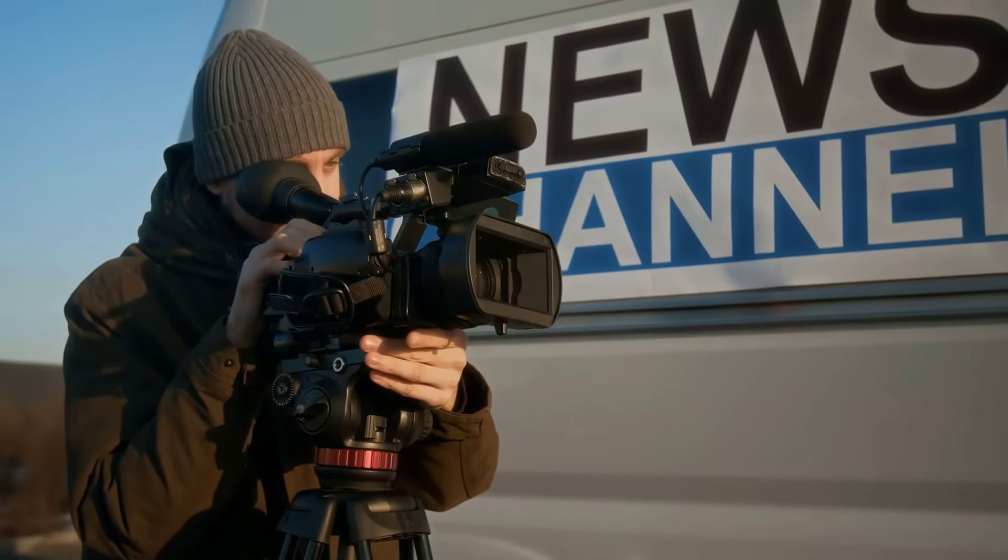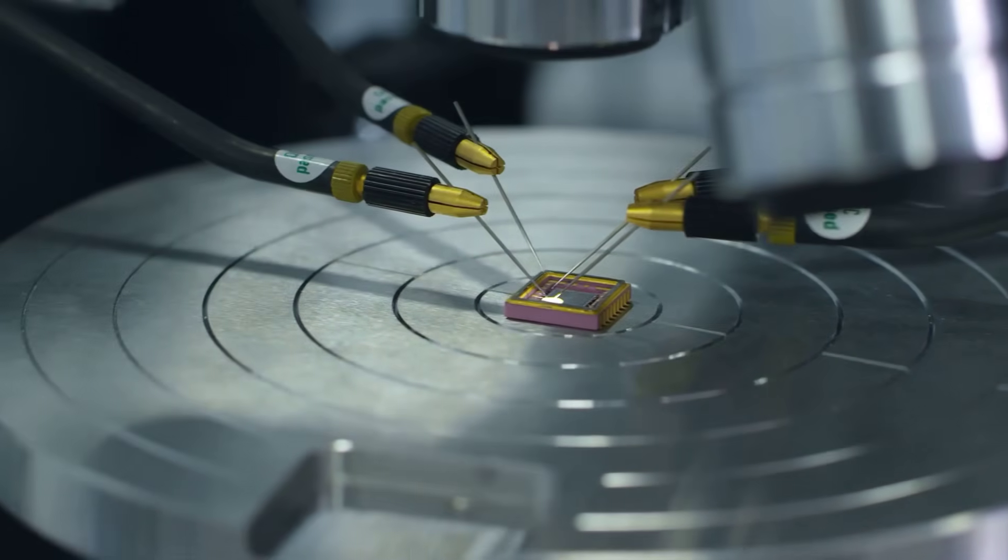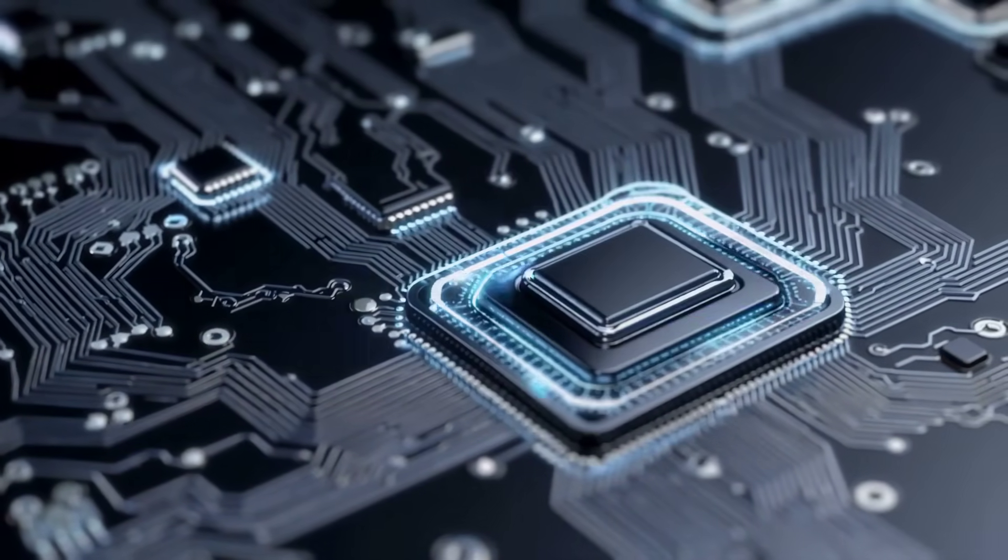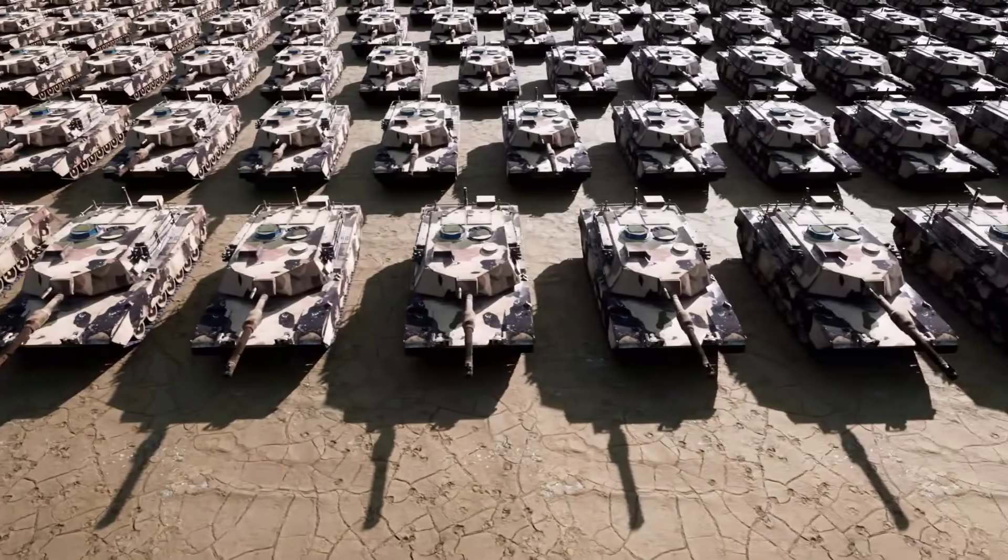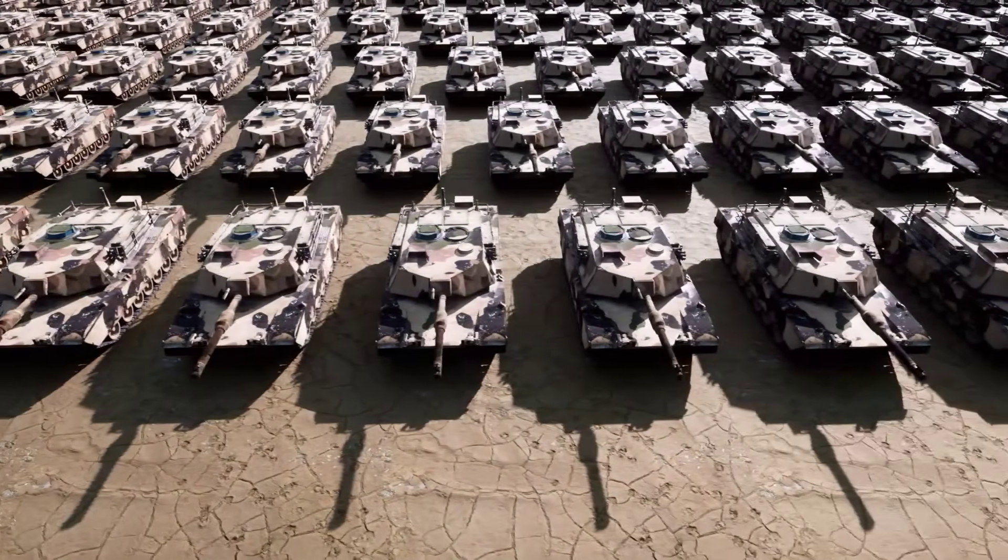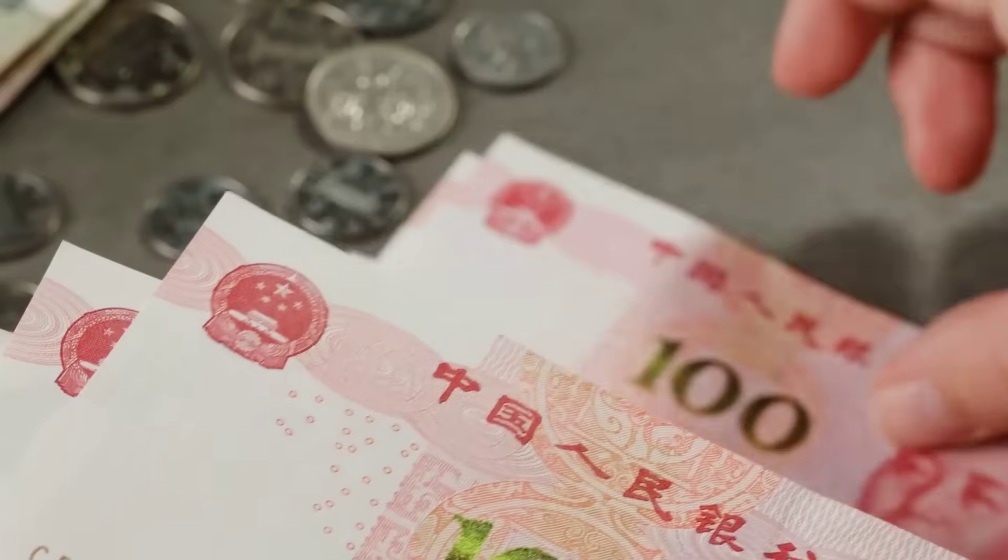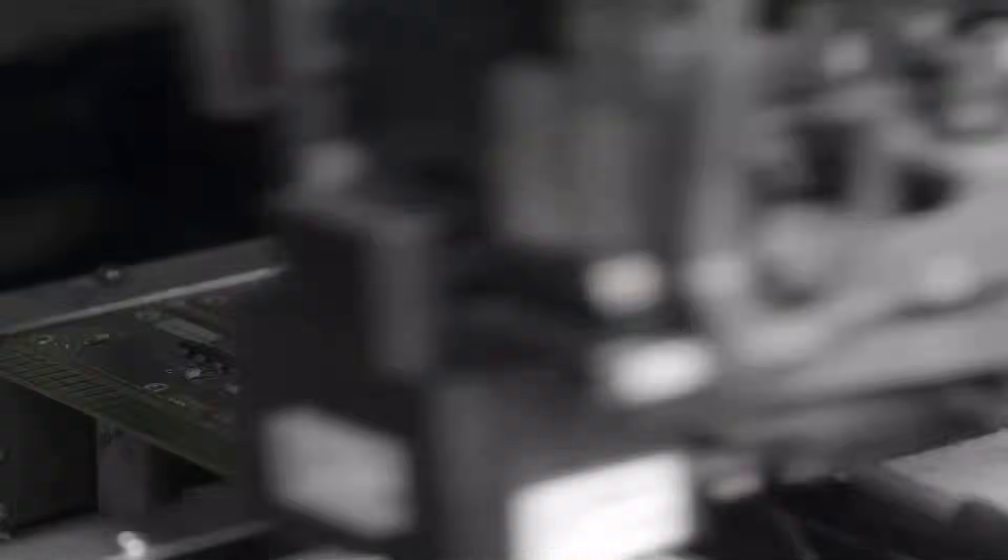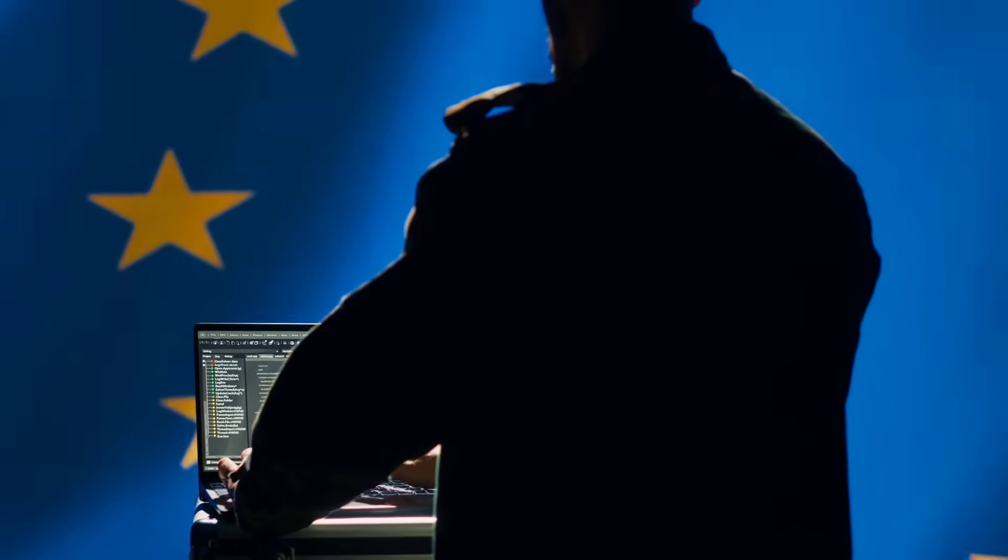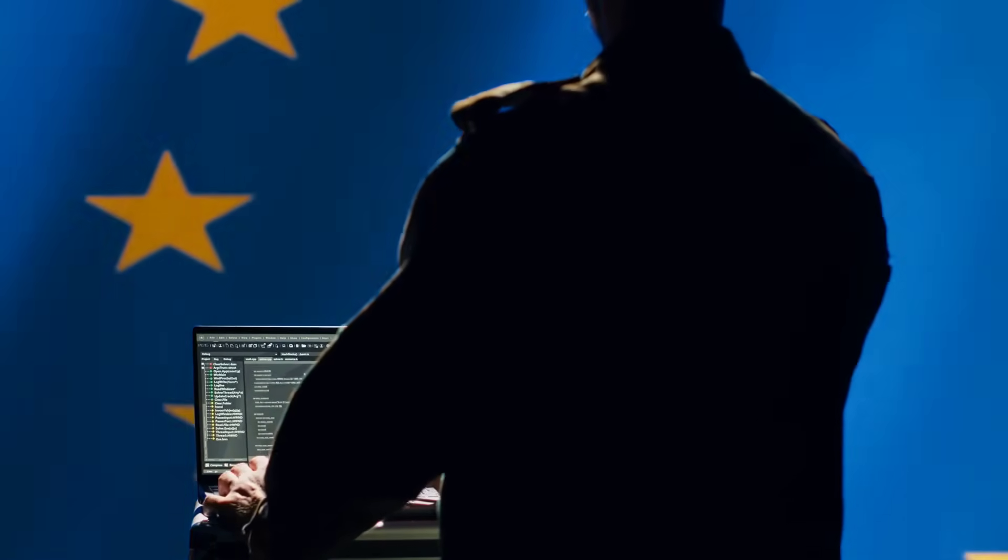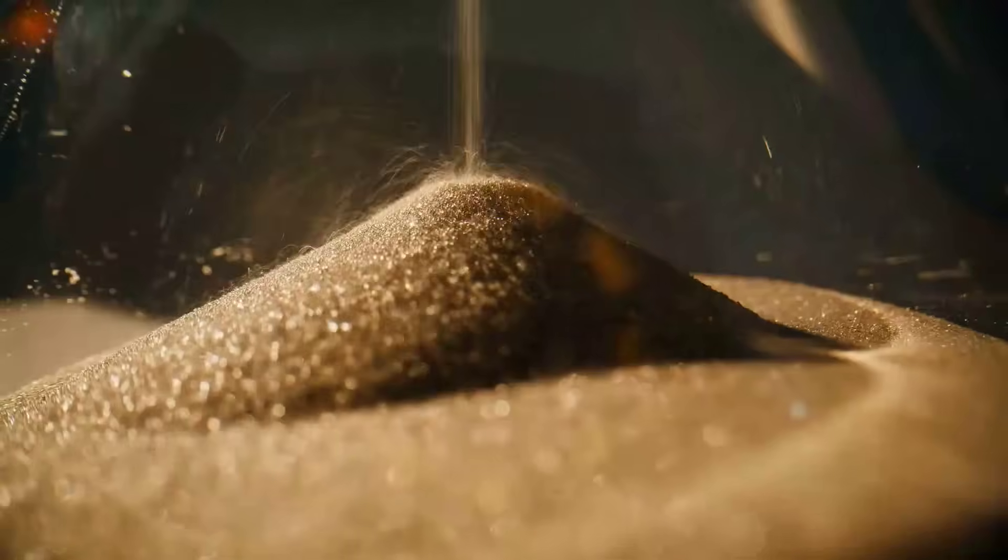But here's where this gets really intense. And this is the part the media isn't covering. China, the United States, and Europe are no longer racing for the most powerful chip. They're racing for the lowest power chip. Because whoever cracks analogue AI first doesn't just win the tech industry. They win military supremacy, economic dominance, and control over the next 50 years of innovation. China just announced a $50 billion fund specifically for analogue and neuromorphic computing. The U.S. CHIPS Act quietly earmarked billions for alternative computing architectures. The EU has a secretive program called Horizon Beyond, focused on this exact technology.